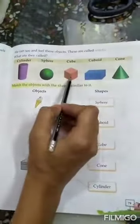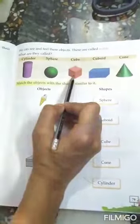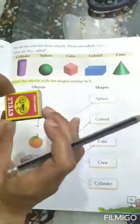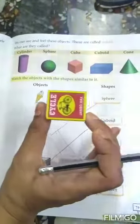Yes or no? Okay, now the next shape is cube. See the dice. What is this? Dice. What is the shape of this dice? Cube. Mere saath bolo, this is cube. Yes. Next, cuboid. See, what is this? Matchbox. What is the